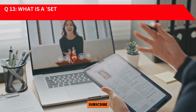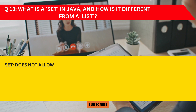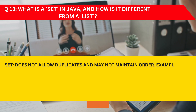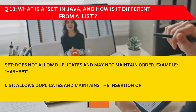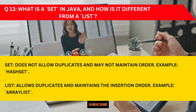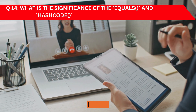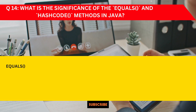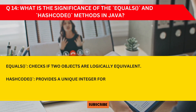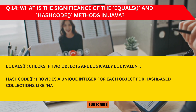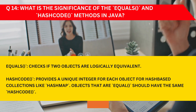Question 13: What is a Set in Java and how is it different from a List? A Set does not allow duplicates and may not maintain order — for example, HashSet. A List allows duplicates and maintains insertion order — for example, ArrayList. Question 14: What is the significance of the equals and hashCode methods? The equals method checks if two objects are logically equivalent, while hashCode provides a unique integer for each object for hash-based collections like HashMap. Objects that are equal should have the same hash code.